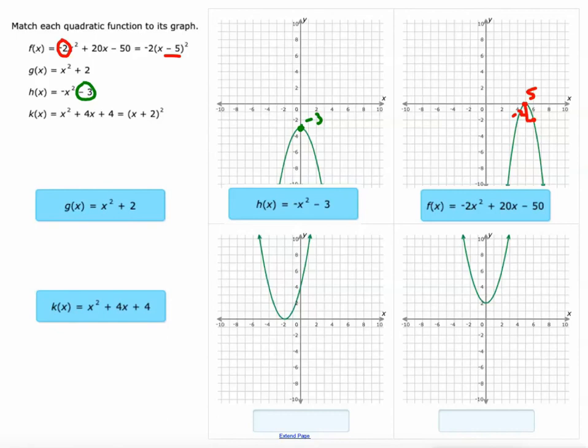So what could we use there? Well we could use this y-intercept of plus 2 which is right here and this one's got a y-intercept of positive 4 which is right there. So those would be good enough to distinguish.